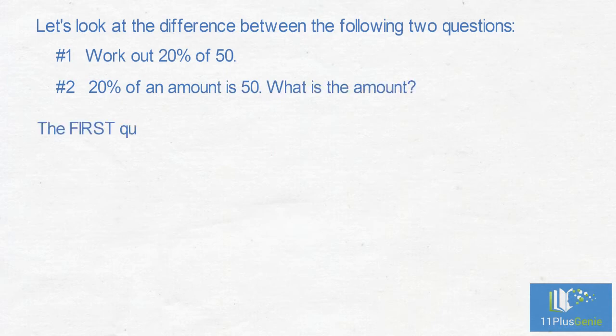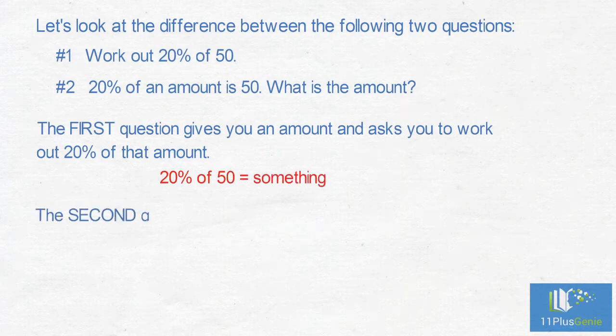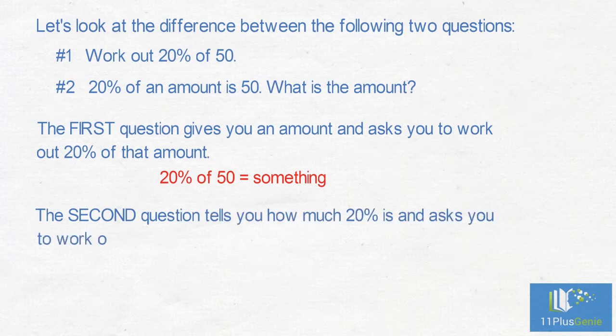The first question gives you an amount and asks you to work out 20% of that amount. 20% of 50 equals something. The second question tells you how much 20% is and asks you to work out what the amount is. 20% of something equals 50.